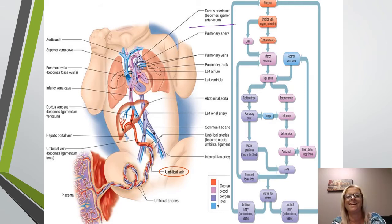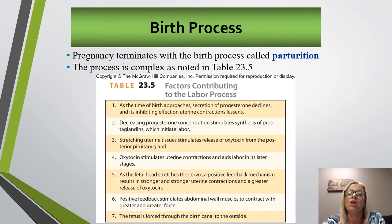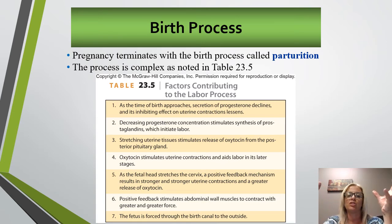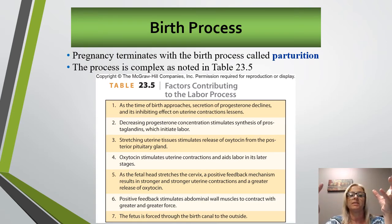After birth, the foramen ovale is closed as a result of increasing pressure in the left atrium. This is an opening through the atrial septum moving to the left atrium — not to be confused with the foramen ovale in the skull. Pregnancy is going to terminate with parturition, which is the birth process.